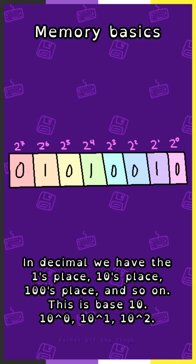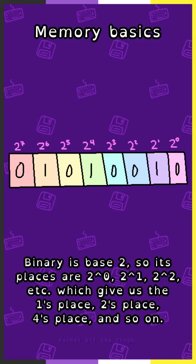10 to the 0, 10 to the 1st, and 10 to the 2nd. Binary is base 2, so its places are 2 to the 0th, 2 to the 1st, and 2 to the 2nd, which gives us the ones place, twos place, fours place, and so on.